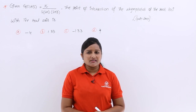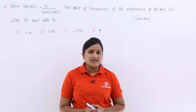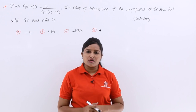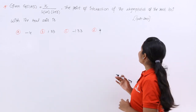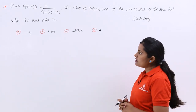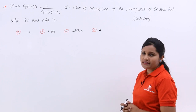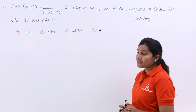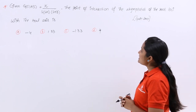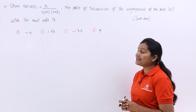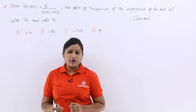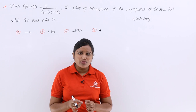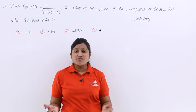In this video we are going to discuss one more gate problem related to root locus. This problem is related to the centroid of the root locus, given in 2004 for one mark. The open loop transfer function G(s)H(s) is equal to K divided by s(s+1)(s+3). The question asks for the point of intersection of the asymptotes of the root loci with the real axis, which is the centroid.